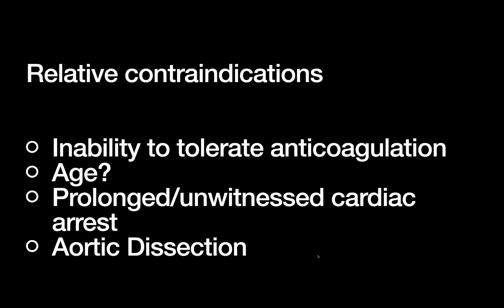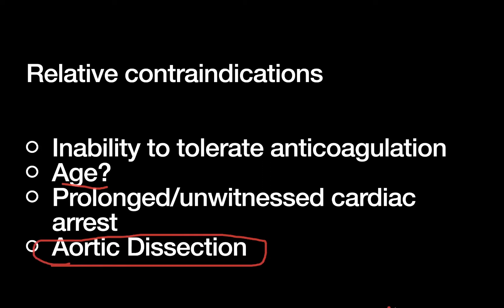Some relative contraindications: because ECMO is a continuous flow pump with many parts that can form clots, all of these patients are on anticoagulation. Any inability to tolerate anticoagulation — for example, GI bleeding or bleeding after trauma — is a relative contraindication. Age is a bit controversial; there's no fixed age cutoff, but clinicians are generally more unwilling to put older patients on ECMO. An unwitnessed cardiac arrest, damage to the aorta itself such as aortic dissection, or aortic insufficiency or regurgitation can also be contraindications.